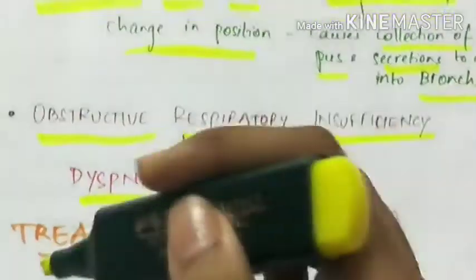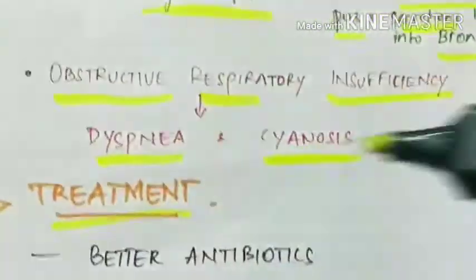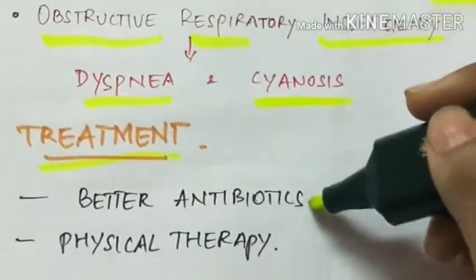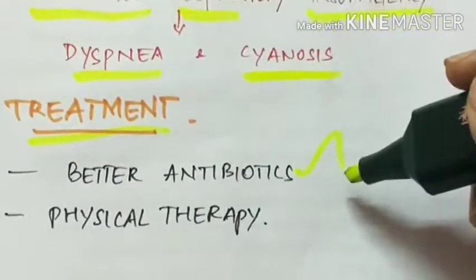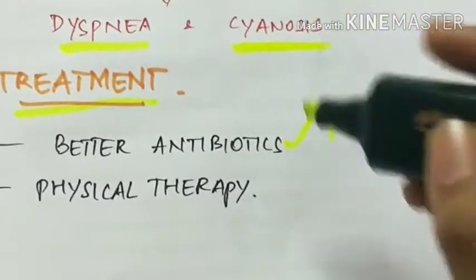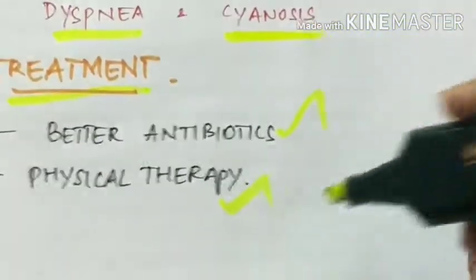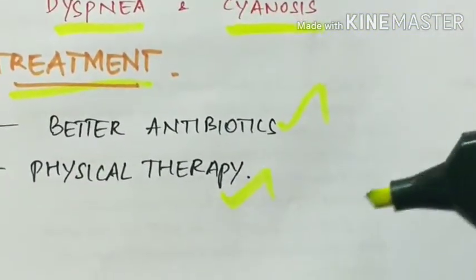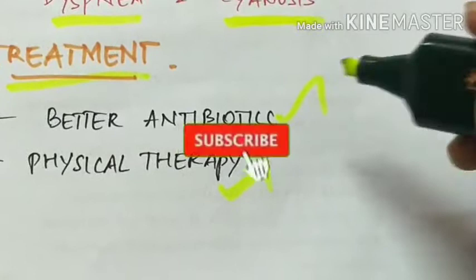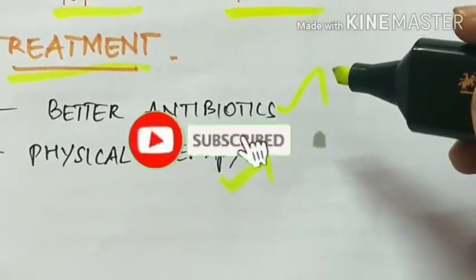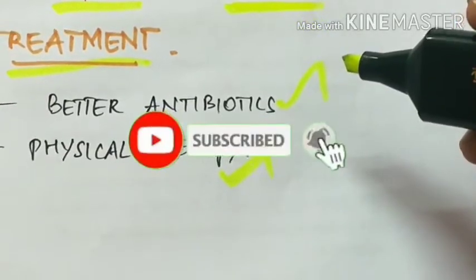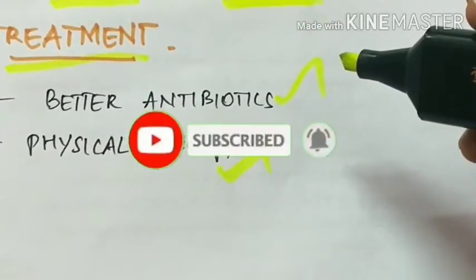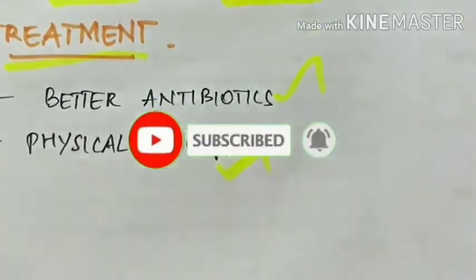Treatment of bronchiectasis is done by giving appropriate antibiotics and by physical therapy. We will see about the last obstructive lung disease, that is asthma, in the next video.